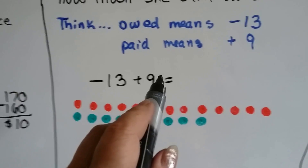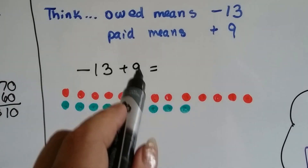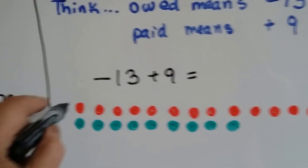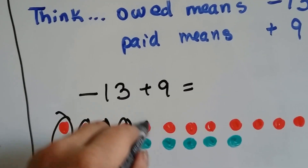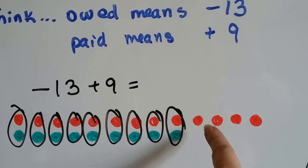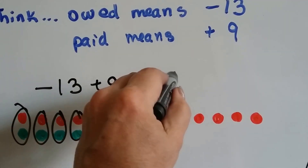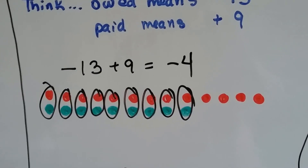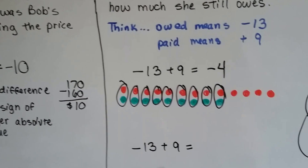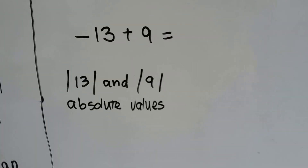We have 13 red dots to represent the negative 13, and 9 green dots to represent the positive 9. All we do is make zero pairs. Just keep making zero pairs — we don't have to count until we're done. We count how many are left over: there are four red ones, and red means negative, so our answer is negative 4. For smaller numbers, making zero pairs is a nice method.